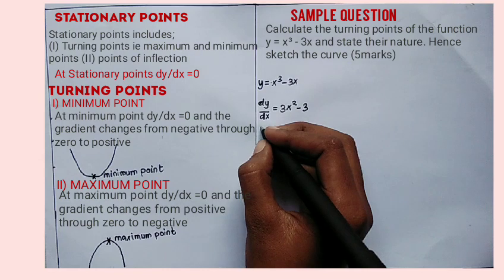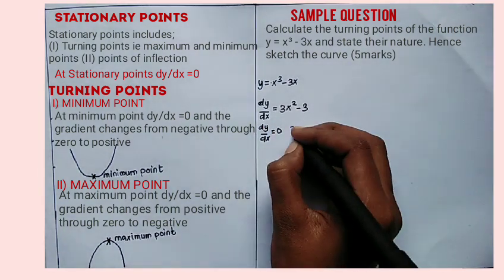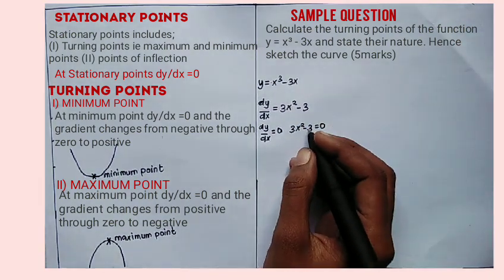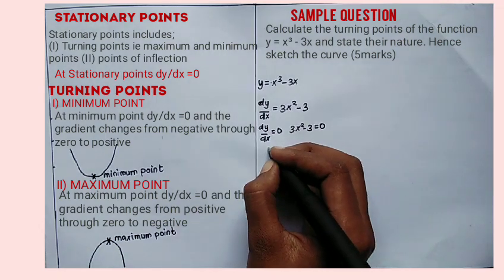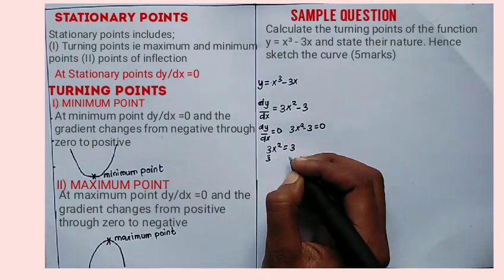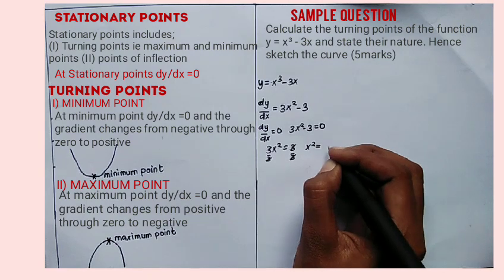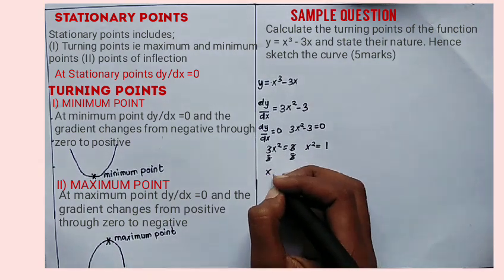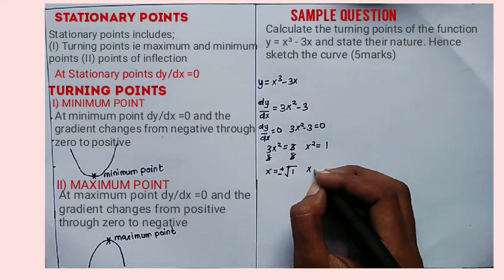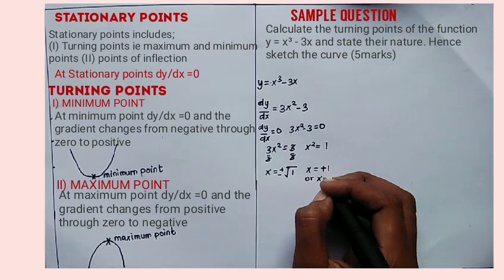At turning points, dy over dx is equal to 0. So we say 3x squared minus 3 is equal to 0. If we take negative 3 to the other side, it becomes positive: 3x squared is equal to 3. Divide both sides by 3 — x squared is equal to 1. So x is equal to the square root of 1, which means x can either be positive 1 or x is equal to negative 1.